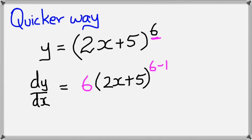Now there's one extra step you've got to do with the chain rule. And that is, you have to multiply by the differentiation of whatever's inside the bracket. So see how we have 2x plus 5 here? If you differentiate 2x plus 5, you would get 2. And that's what it is.